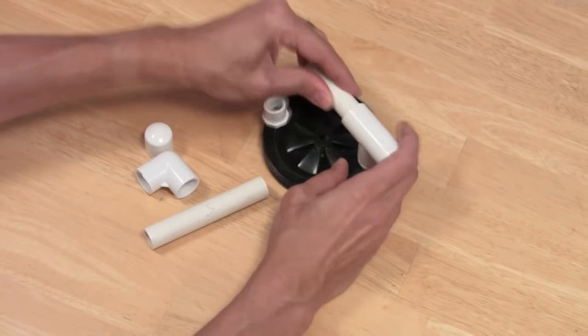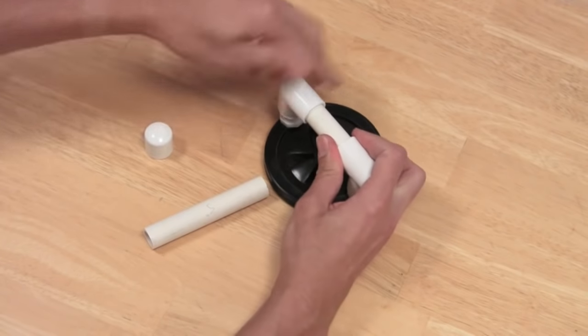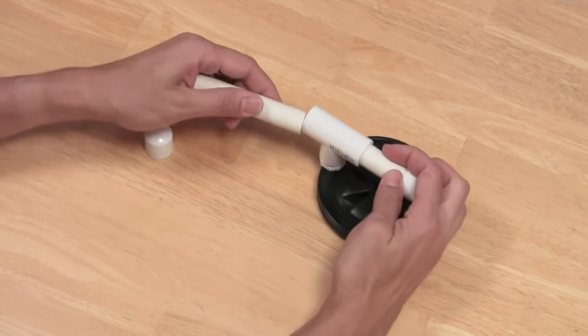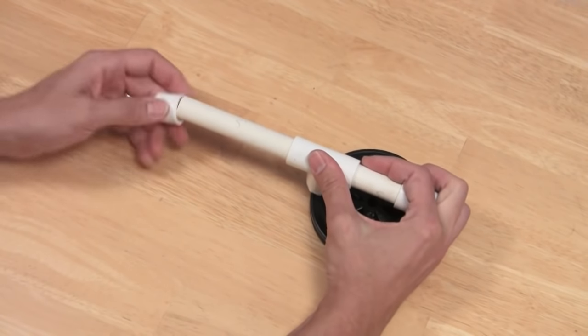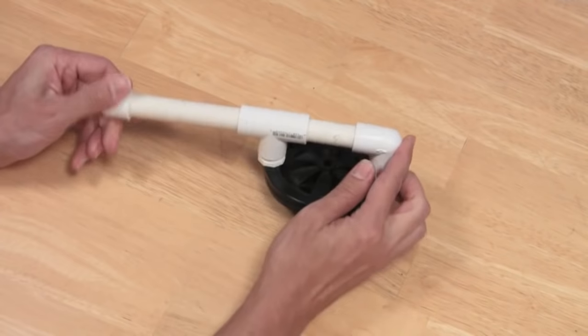Then you can assemble your PVC parts like so. The smaller PVC pipe, your three-inch pipe, will go in the middle of your two joints. And your five-inch piece will go in the end of your T-joint like this as your handle, and your cap goes on the end to complete the look. There you go.